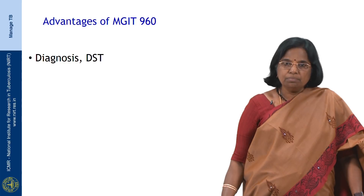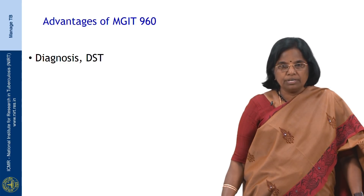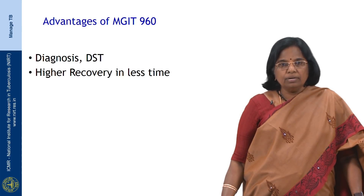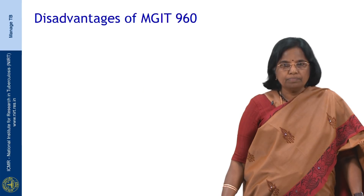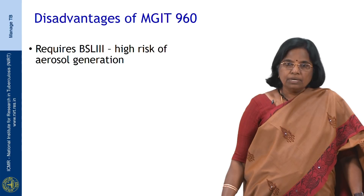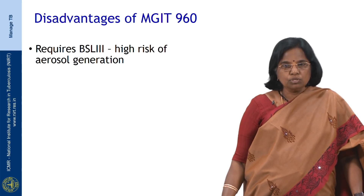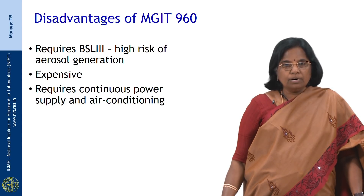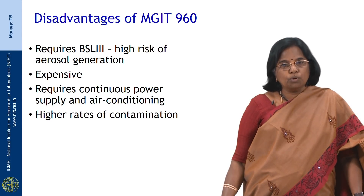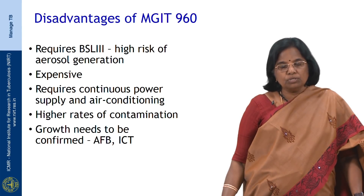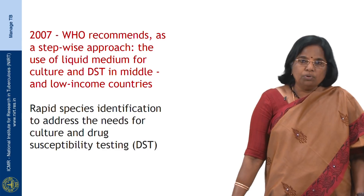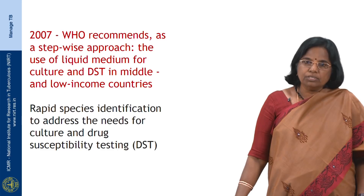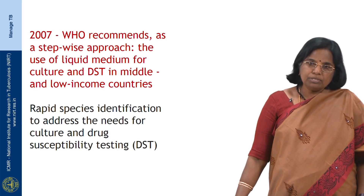Advantages of MGIT 960: the system can be used for diagnosis as well as drug susceptibility testing. It ensures higher recovery in shorter time, has higher sensitivity than solid culture, and growth supplements can be added to enhance growth. Disadvantages: it requires biosafety level 3 facilities due to the high risk of aerosol generation. It is expensive and requires continuous power supply and air conditioning. It is also highly prone to contamination and growth needs to be confirmed by AFB staining and immunochromatography. In 2007, WHO recommended a stepwise approach using liquid medium for culture and DST in middle and low income countries with rapid species identification.